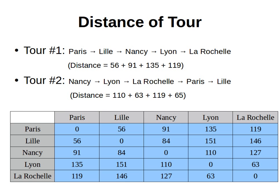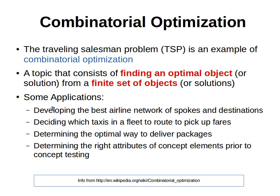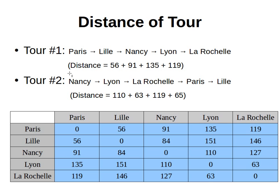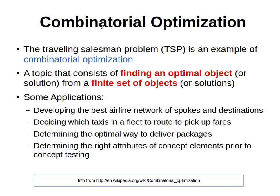This sort of problem is commonly known as a combinatorial optimization problem. I promised we wouldn't have too much math, so let's explain this in plain English. The Traveling Salesman Problem is an example of combinatorial optimization, which consists of finding an optimal solution from a finite set of solutions. The finite set of solutions in our example is the list of all possible tours — we can list all possible tours, go through them one by one, compute the distance, and then choose the tour that gives us the minimum distance.